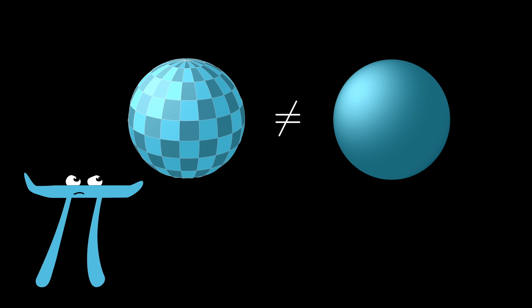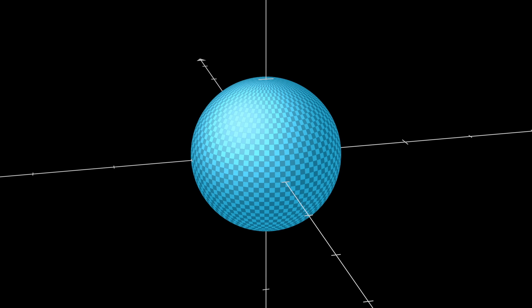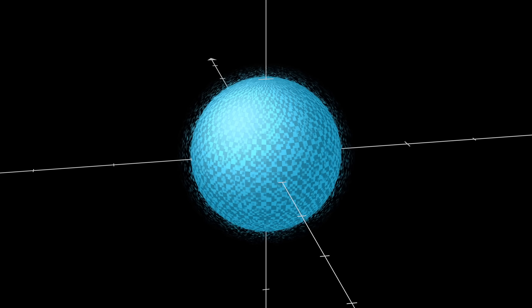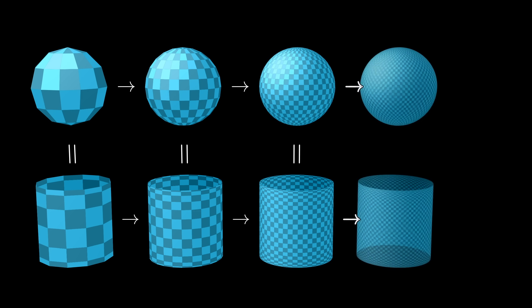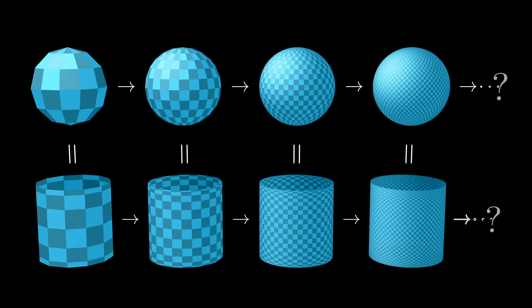Well, the idea is that this approximation gets closer and closer to the true value for finer and finer coverings, and since for any specific covering, the sphere rectangles have the same area as the cylinder rectangles, whatever value each of these two series of approximations are approaching must actually be the same.